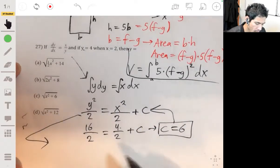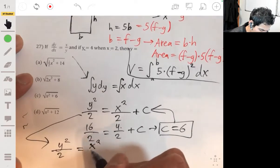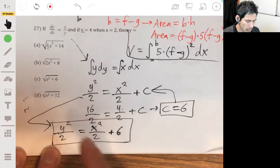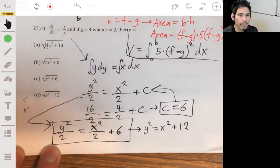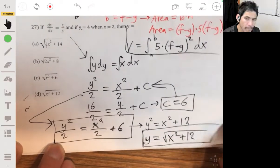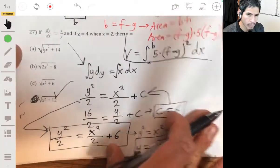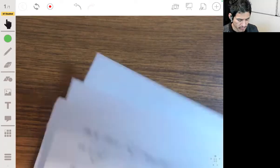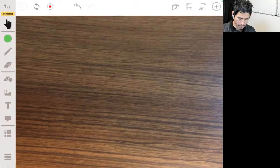So we go back to this. We have that y squared over 2 equals x squared over 2 plus 6. Now we just solve this for y. Multiply everything by 2. We get y squared equals x squared plus 12. And then we just square root it and we get y equals the square root of x squared plus 12. And so the answer will be D.